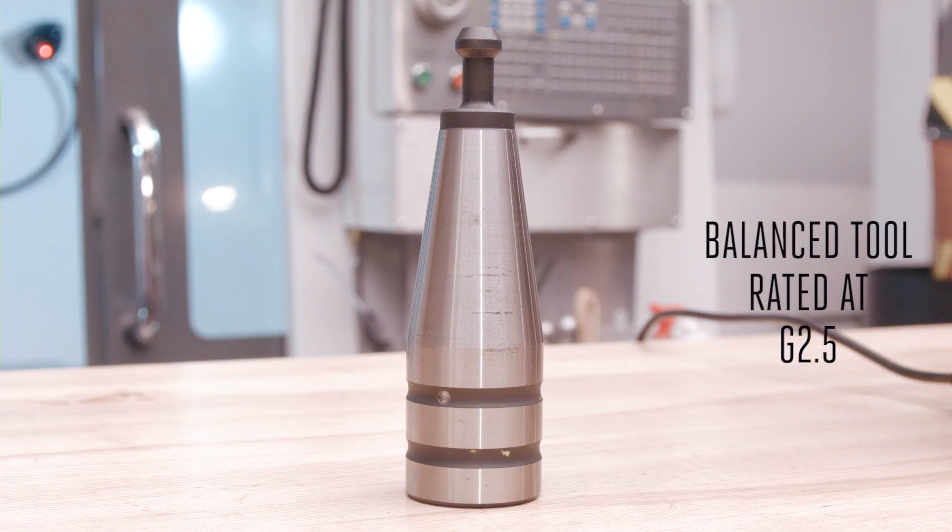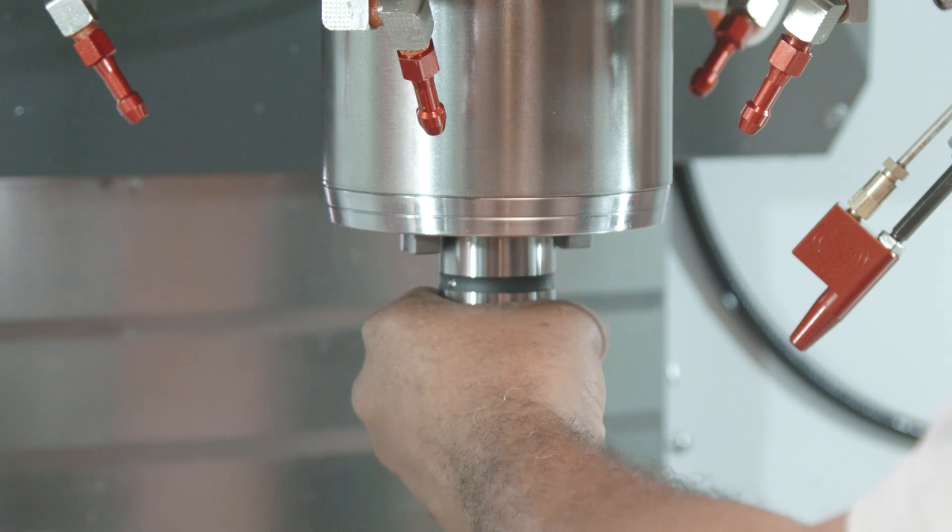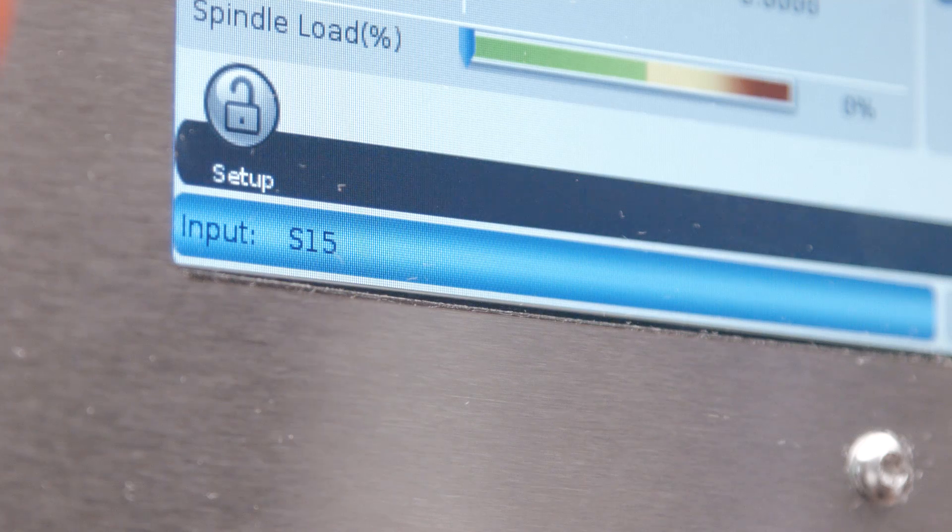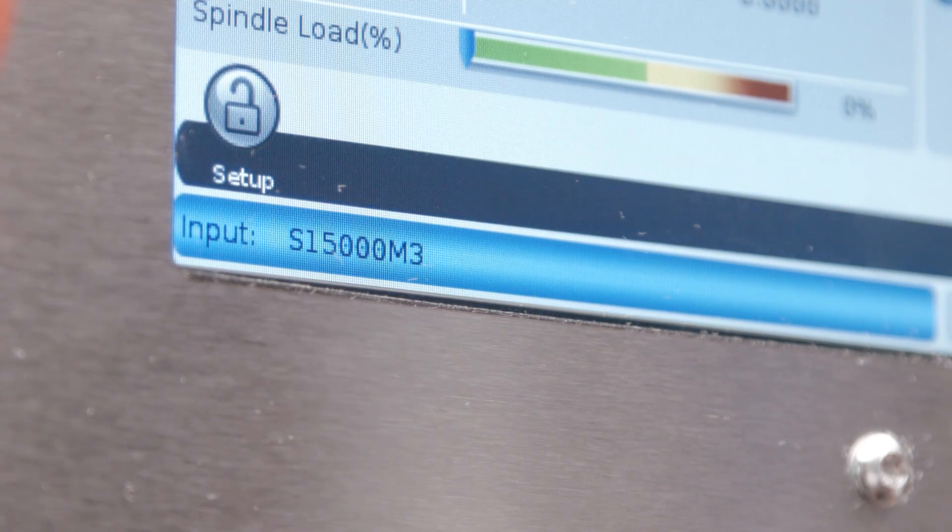Install a balanced tool holder rated G2.5 or better and run the spindle at max RPM and note whether the vibration or noise problem still exists.